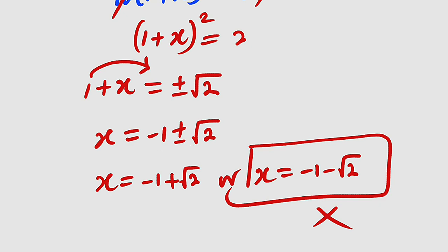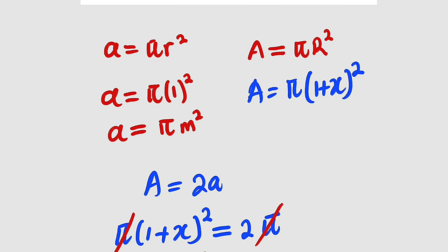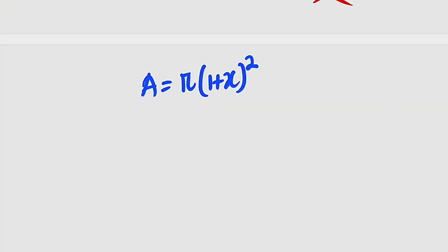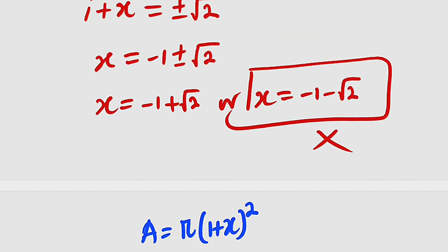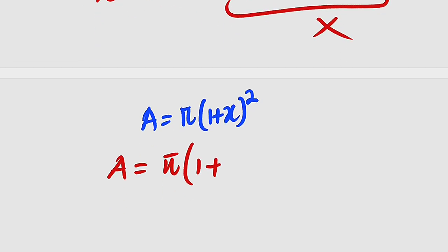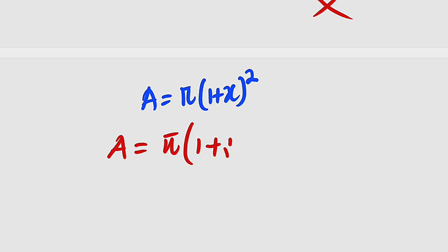And we are asked to find the area of the larger circle. And we already have the formula here. So this is the area of the larger circle. Let us substitute the value of x. A will now be equal to pi. In bracket, we have 1 plus what is x. x is negative 1 plus root 2. We have root 2 minus 1. They are all the same. Squared.